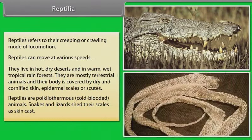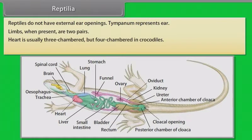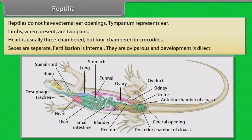Snakes and lizards shed their scales as skin cast. Reptiles do not have external ear openings; tympanum represents the ear. Limbs, when present, are two pairs. Heart is usually three-chambered, but four-chambered in crocodiles. Sexes are separate. Fertilization is internal. They are oviparous and development is direct.